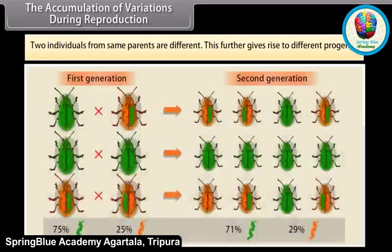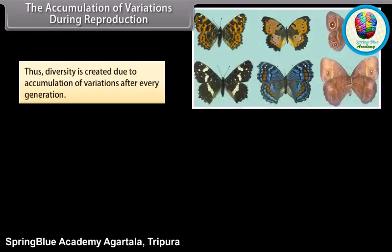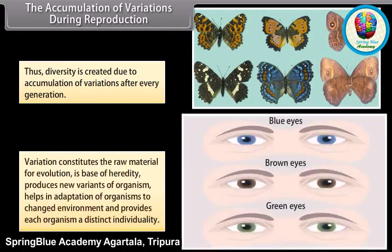Two individuals from same parents are different. This further gives rise to different progeny. Thus, diversity is created due to accumulation of variations after every generation. Variation constitutes the raw material for evolution, is the base of heredity, produces new variants of organisms, helps in adaptation of organisms to changed environment, and provides each organism a distinct individuality.